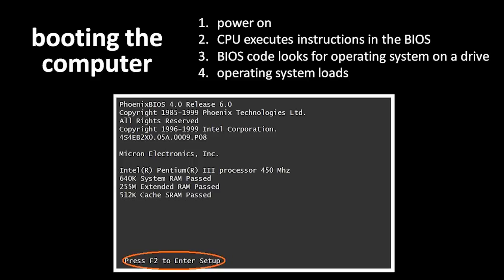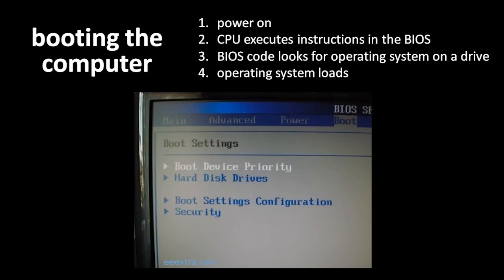After powering on the system, the first thing you should see is this screen drawn by the BIOS. Typically there's a message at the bottom or top that tells you that you can hit a certain key on the keyboard, like F2 in this example, and that will take you to the BIOS's configuration menu, where you can configure some basic options in your system. Most importantly, you can tell the BIOS which drives it should look at when it tries to find an operating system.